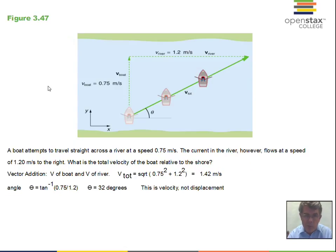Let's put some numbers on it: 0.75 meters per second for the velocity of the boat, 1.2 meters per second for the velocity of the river. To find the magnitude of the total velocity, we should recognize we have a right triangle. With the boat going directly across the river, that velocity is perpendicular to the river current direction. We've been given the two sides of the right triangle.